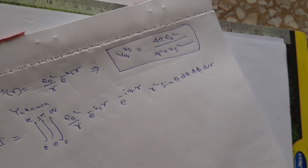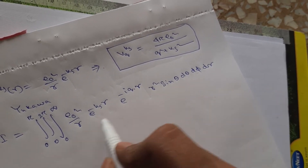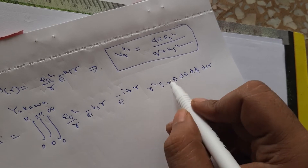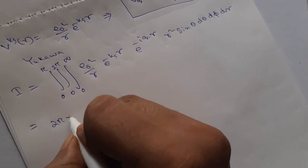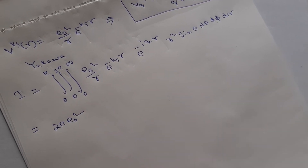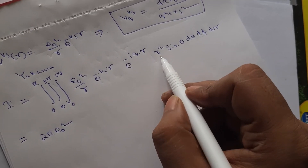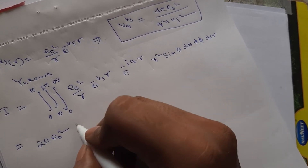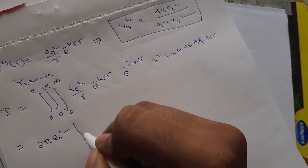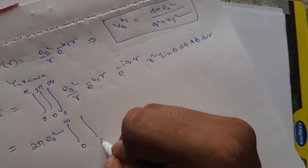Since there is no φ-dependent variable, the dφ integral simply gives 2π. This factor of 2π comes out front as 2π e₀², and the r from the potential and the r² from the volume element simplify so that one factor of r remains.